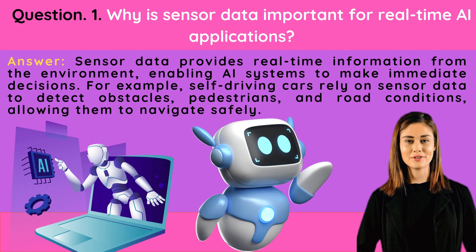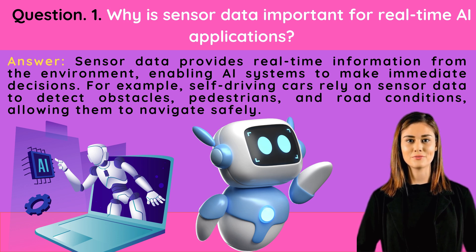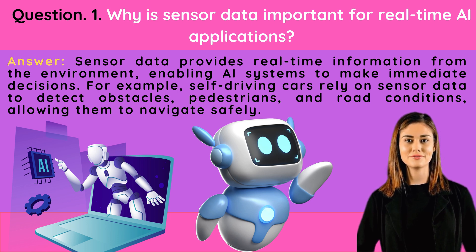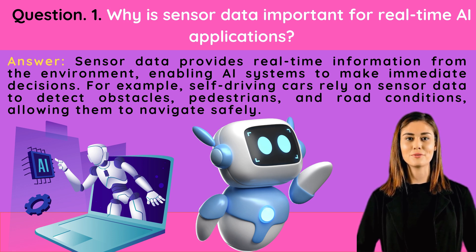Why is sensor data important for real-time AI applications? Sensor data provides real-time information from the environment, enabling AI systems to make immediate decisions. For example, self-driving cars rely on sensor data to detect obstacles, pedestrians, and road conditions.